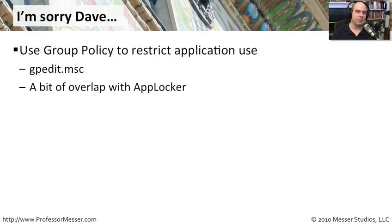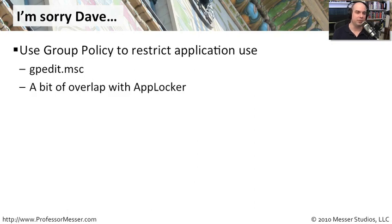You set software restriction policies using your local security policy editor or the group policy editor. You can simply go to Start > Run and type gpedit.msc, and it'll bring up that group policy editor. You could also type in 'group policy' to access it as well.